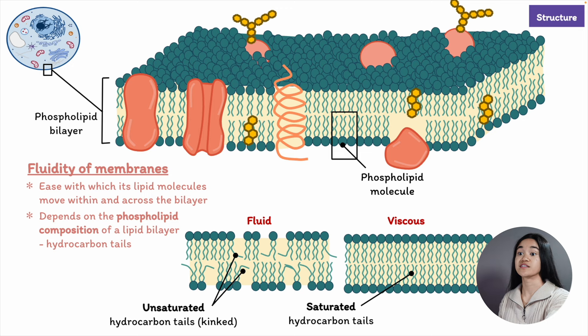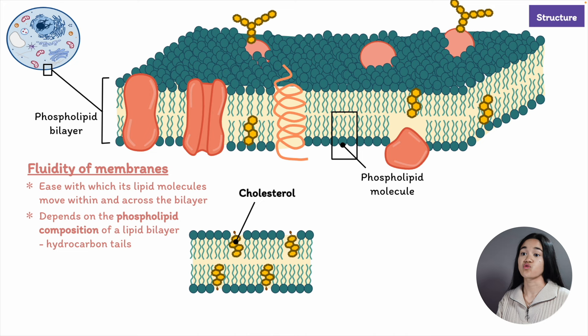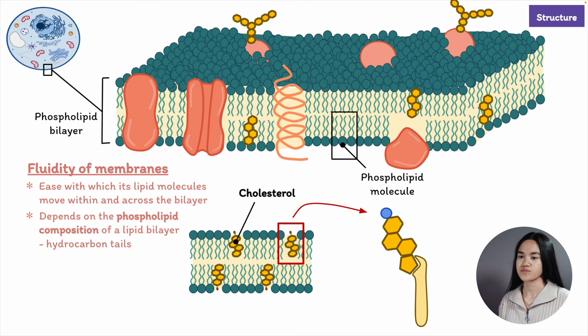The more closely packed the hydrocarbon tails are, the more viscous and less fluid the bilayer will be. This is where cholesterol comes in. In animal cells, the presence of cholesterol controls the fluidity of the membrane — it alters the fluidity. Let's take a closer look at the structure of cholesterol before discussing its importance.